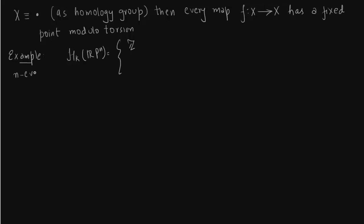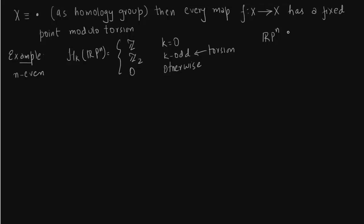Now let us talk about an example. Take n as even. You can see the homology groups — we have computed these before. The torsion-free group is only integers. So the homology of ℝPⁿ is equivalent to a point as a homology group if you take out the torsion groups. The only non-zero homology group remains at dimension zero. So any map f from ℝPⁿ to ℝPⁿ will have a fixed point.